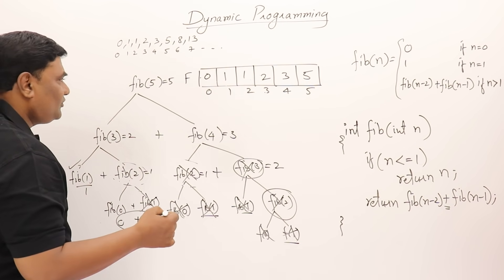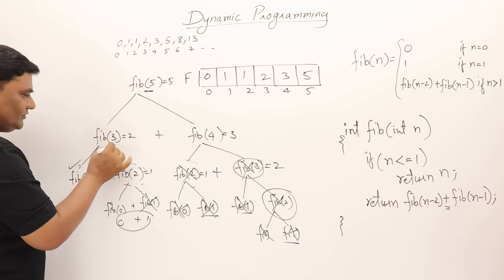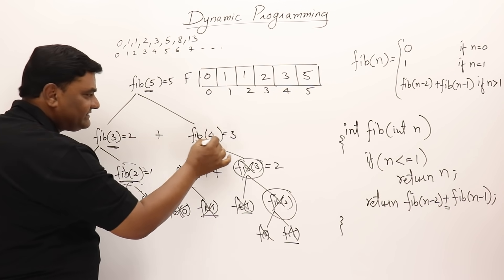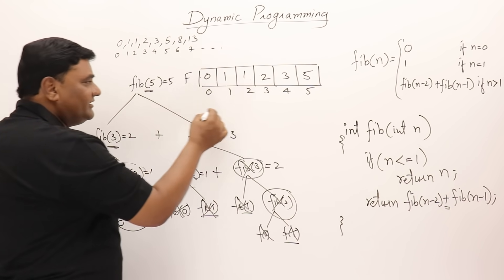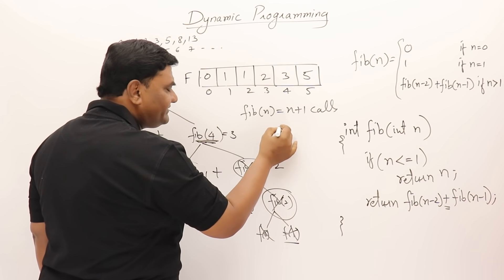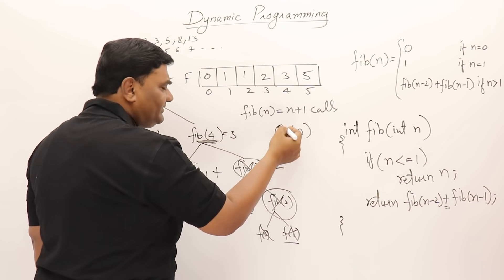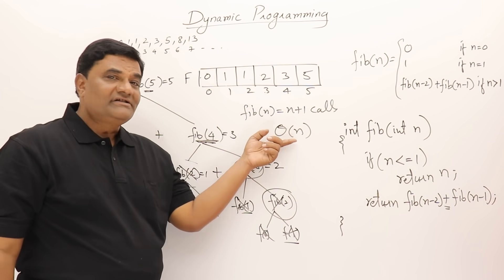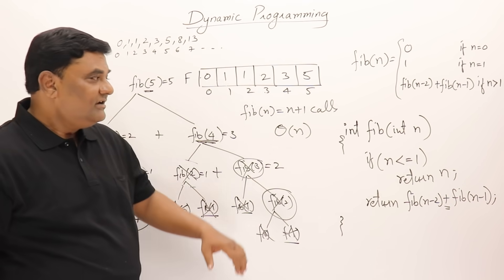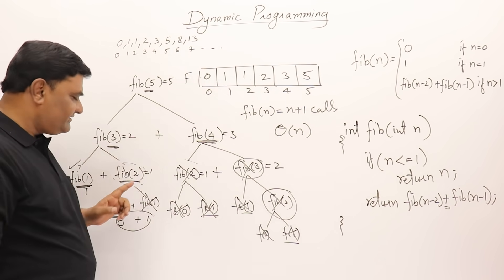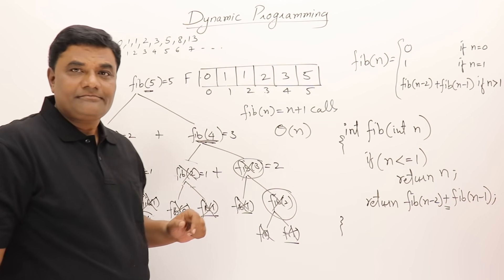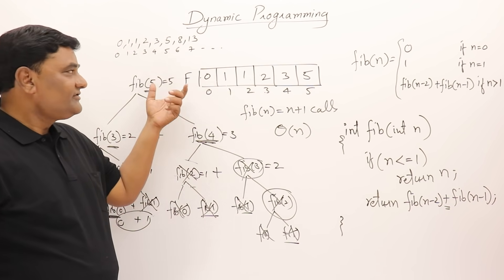If we count the number of calls now: 1, 2, 3, 4, 5, 6 — that's all, total 6 calls. When finding fib(n) it is making n+1 calls, which is O(n). This is memoization — by storing the results of function calls we avoid calling the same function again, like fib(2) already stored, fib(3) already found.